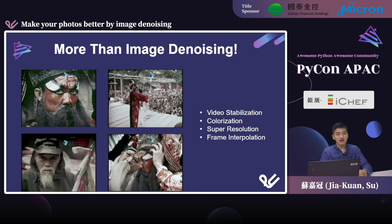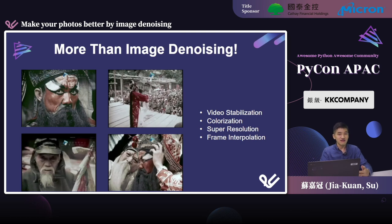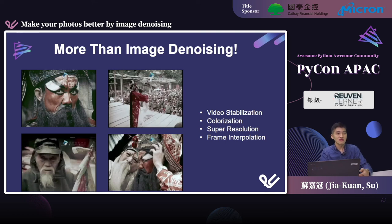Defect removal is just one task for old film restoration. There are also many other important tasks like video stabilization, colorization, super resolution, and frame interpolation that need to be overcome. These tasks will make the video quality much better and give the video new meaning for audiences. Image denoising is the most fundamental technique, and it is possible to apply similar techniques to these other tasks. So learning about image denoising helps us understand how to solve other, harder problems.